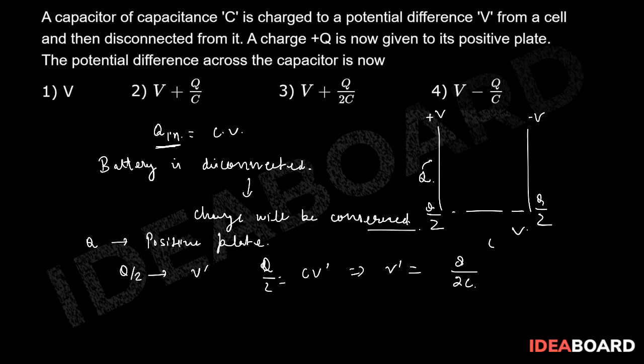So we need potential difference across the capacitor. So potential difference total will be equal to V plus V dash. If you put the value we get V plus V dash is Q by 2C.